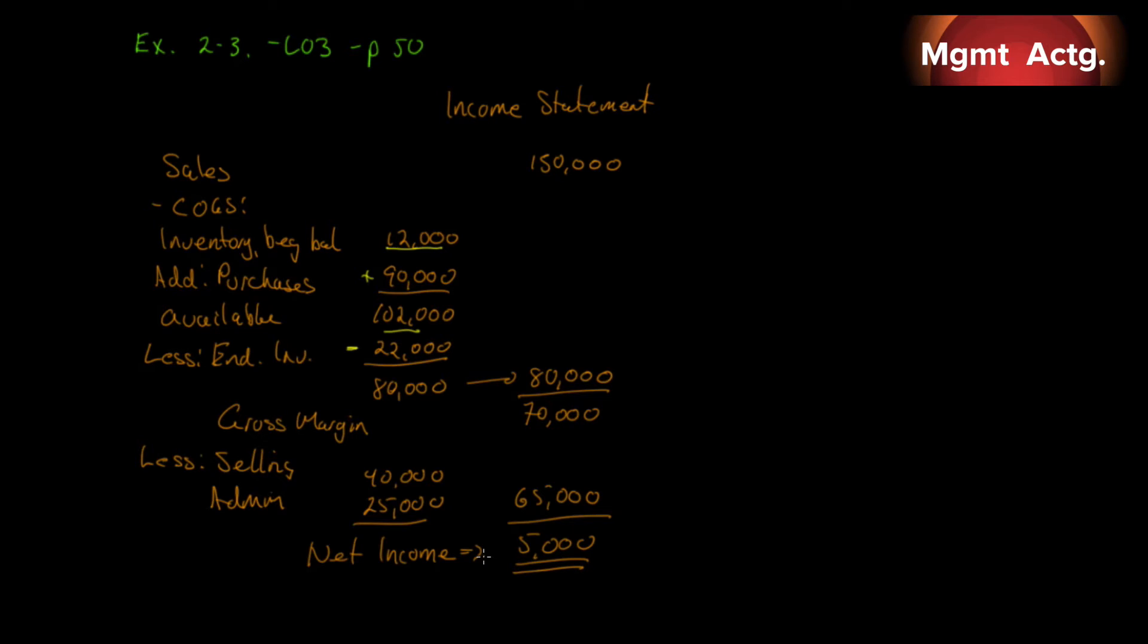Now, it would typically be easy to do if we had a number for cost of goods sold. But we don't have a number for cost of goods sold. So, we have to calculate it. But we've seen this before. We've already done this kind of calculation before in working our way through raw materials, finished goods inventory, work in process, etc. So, this is nothing new, right?